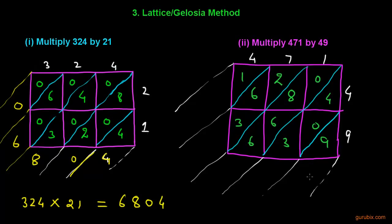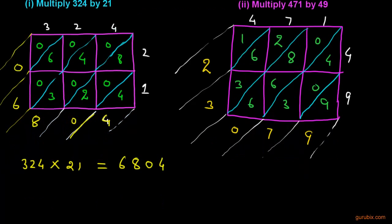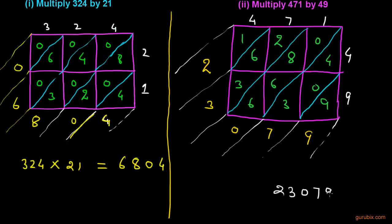The first diagonal gives just 9. Adding 4 plus 3 gives 7. Adding the next diagonal gives 20 — write 0 and carry 2. Then 2 plus 2 is 4; 4 plus 6 is 10; 10 plus 3 is 13 — write 3 and carry 1. The next diagonal: 1 plus 1 is 2. So the solution is 23,079. The multiplication of 471 by 49 is 23,079.